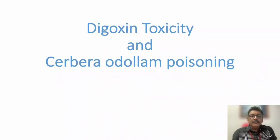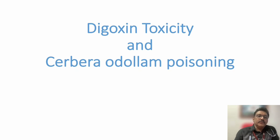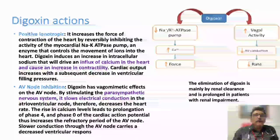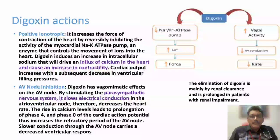Welcome to AATCM, the emergency medicine channel. Today let us discuss Digoxin toxicity and one important plant poison related to Digoxin toxicity — Cerbera odollam poison. Digoxin is a drug used in cardiac failure. Nowadays its use is limited to cardiac failure with atrial fibrillation, because of its toxicity.